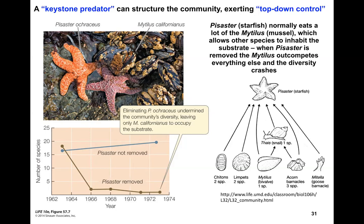The starfish is controlling the mussel. Looking at the number of species in the community by year across different experimental manipulations — similar to Connell's barnacle work — in communities where the starfish Pisaster is not removed, species diversity is fairly high, between 16 and 20 species. Essentially, in all conditions where Pisaster is removed, the mussel completely takes over and dominates all of the substrate, and species diversity crashes.